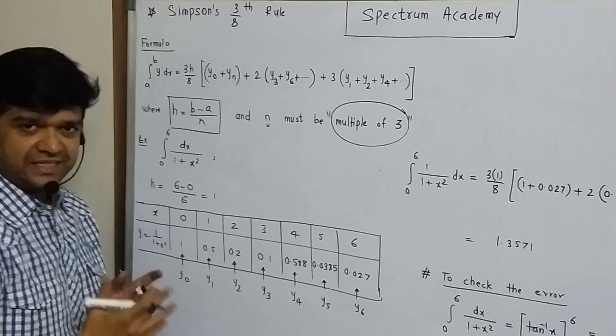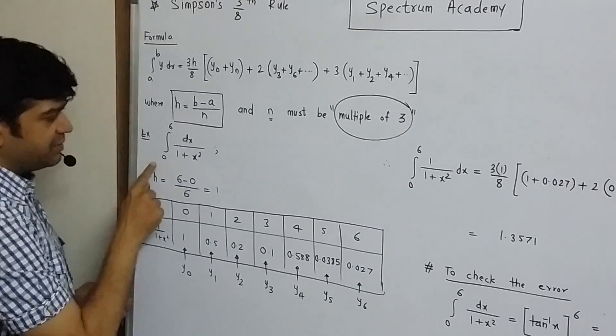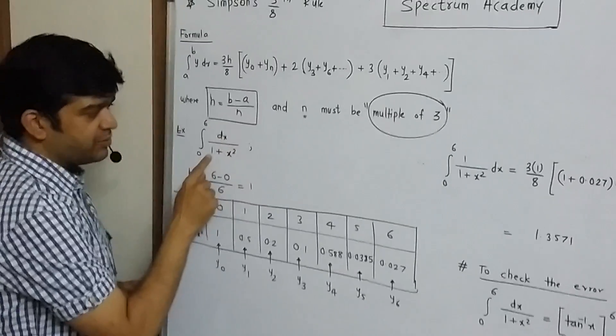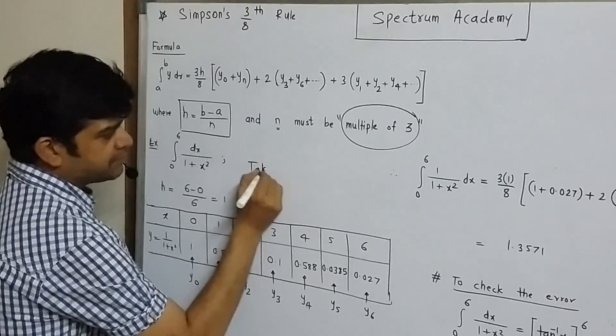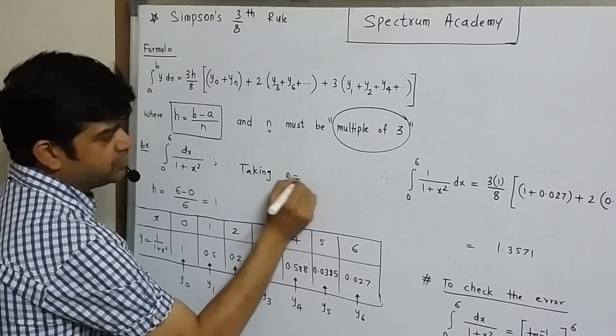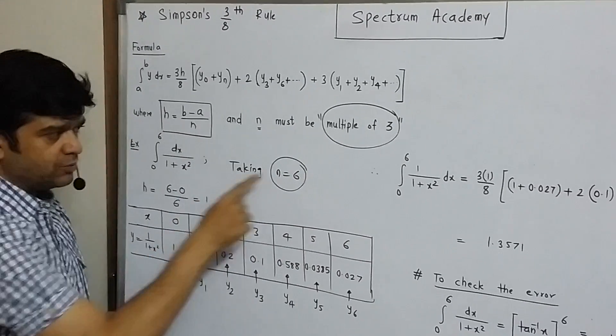The number of subintervals can be either 3 or 6 or 9 or 12. Generally in problems we take 6 as a reasonable estimate. Let's take one example integral 0 to 6 dx upon 1 plus x square. So here I am taking n equal to 6.